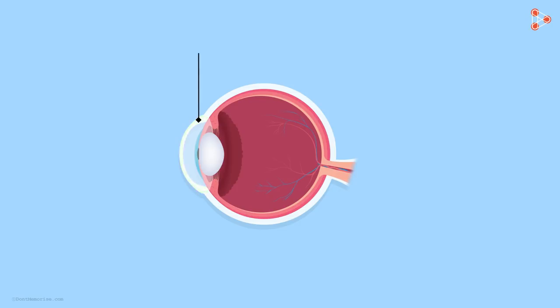The outer layer of the eye is called the cornea. It's white in color and transparent. Transparent? Yes, it means that it allows light to pass through it.